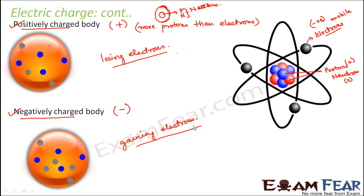Now, why do we talk in terms of losing or gaining electrons? Because electrons are mobile — they can move from one place to another — but protons are not mobile. It is like the old people inside your house who cannot move from one house to another, while kids are very active and run from one house to another. Electrons are like the kids and protons are like the old people. Protons remain inside and cannot move from one atom to another, but electrons can. Therefore, whichever object gains electrons becomes negatively charged, and whichever object loses electrons becomes positively charged.